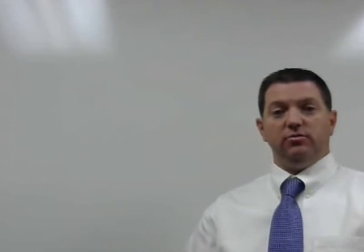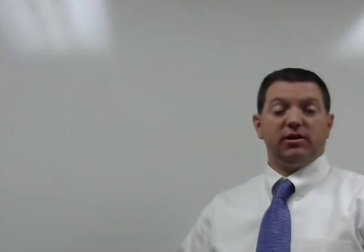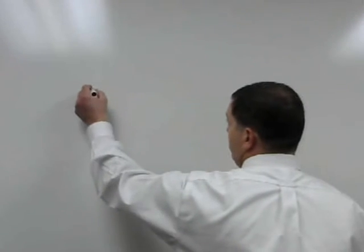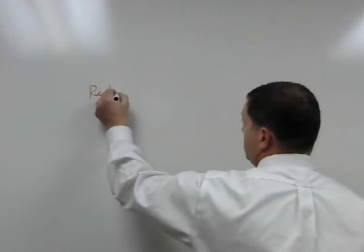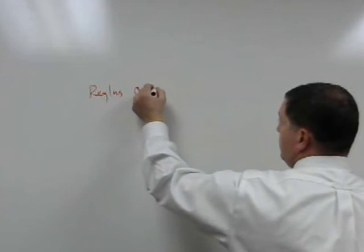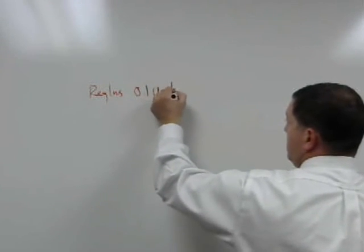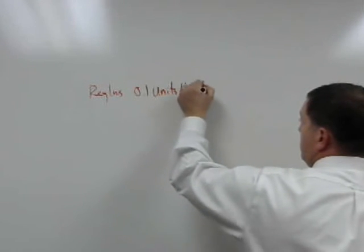Let's say for this example that we have an order to infuse the patient with 0.1 units per kilogram per hour. So we have orders for regular insulin, 0.1 units per kilogram per hour.